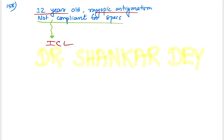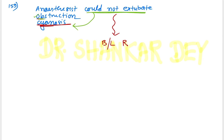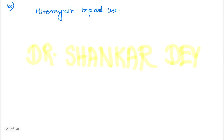Question 159: An anesthesiologist was not able to extubate a patient after surgery — the patient developed features of obstruction and cyanosis with respiratory discomfort. The cause is bilateral recurrent laryngeal nerve palsy. This is the correct answer — inability to extubate after operation with cyanosis and respiratory discomfort pointing to bilateral recurrent laryngeal nerve palsy.